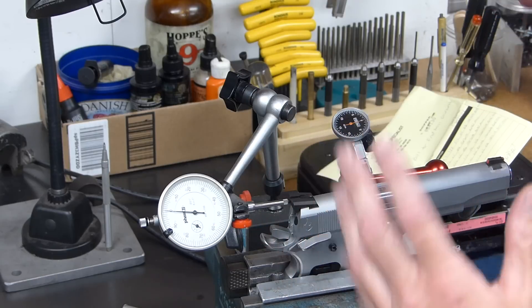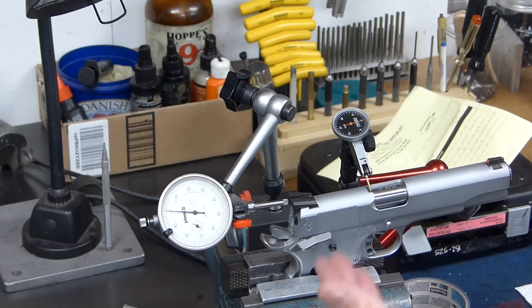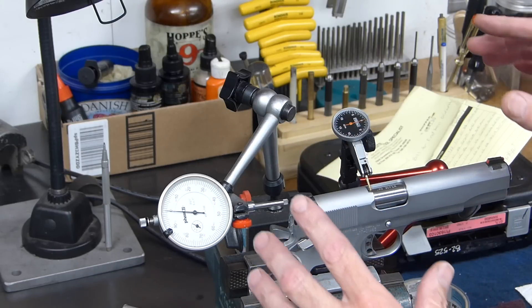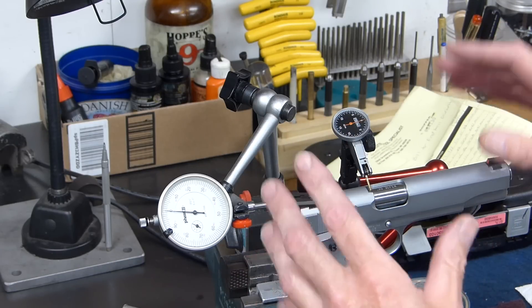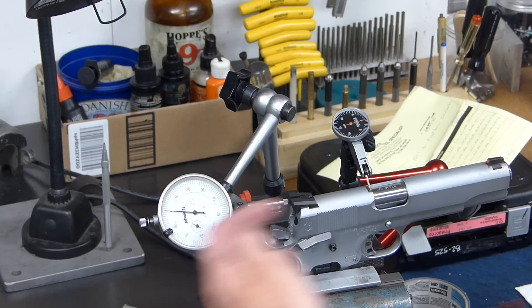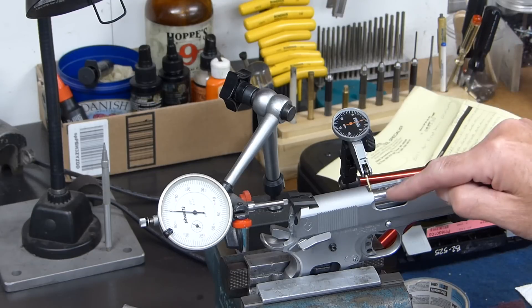So I've got a Lama, $500 Lama 1911 sitting here. It's not important which gun it is, but I just want to show you kind of how it looks. Now I've got one indicator monitoring travel, rearward travel of slide, and another indicator on the barrel hood.